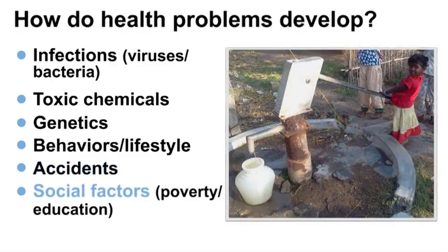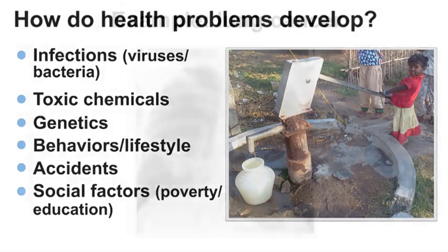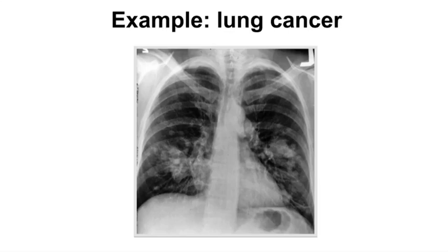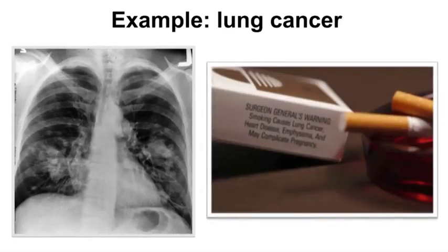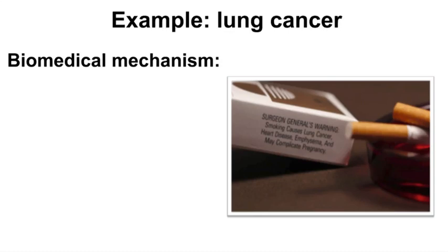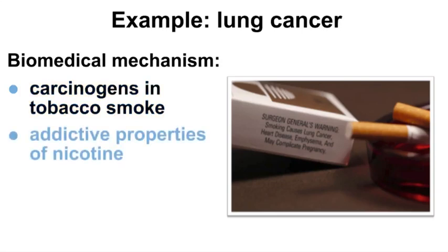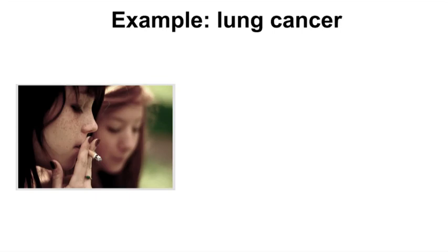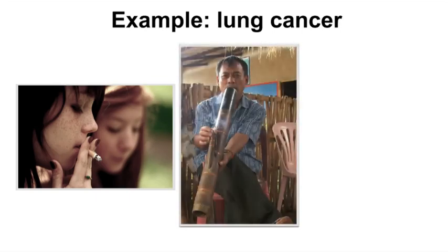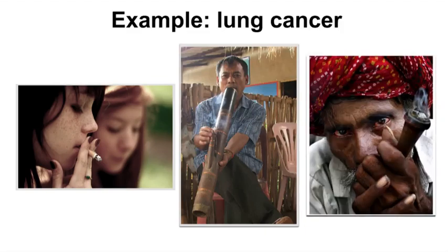Social factors such as poverty and lack of education can expose populations to risks, such as unsafe drinking water, or prevent people from obtaining adequate medical care. Lung cancer is a disease that is well understood — most cases can be attributed to cigarette smoking. The biomedical mechanism linking lung cancer to cigarette smoking is understood; carcinogens in tobacco smoke cause disease, but the addictive properties of nicotine make it difficult to quit smoking. However, there is a social context to the disease, since culture and social factors can influence who smokes and who doesn't.